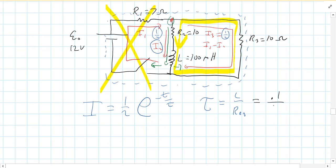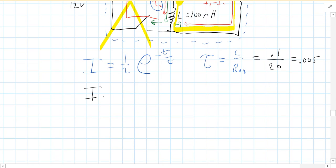Well, you have to go through 10 plus 10, 20 ohms in series. So that's your Req. So this is 0.005. That is your time constant. So your current as a function of time will be 1 half E to the negative T over 0.005.